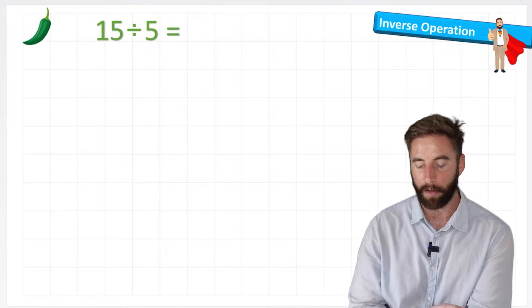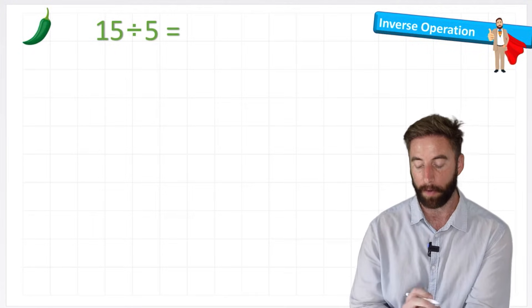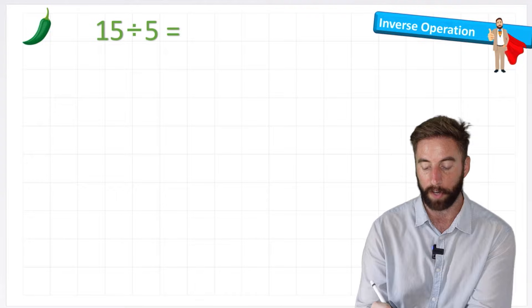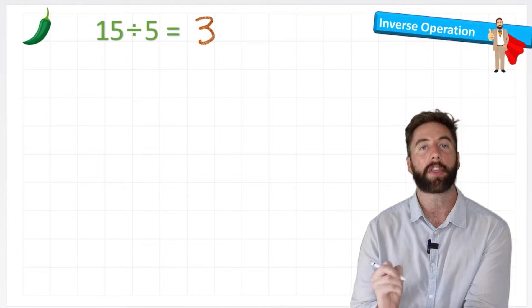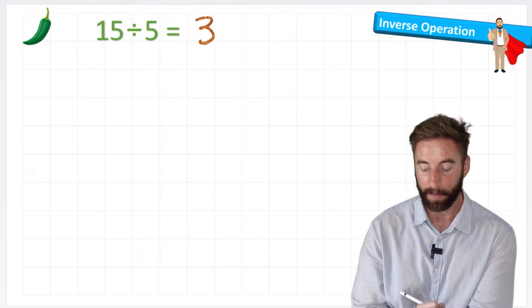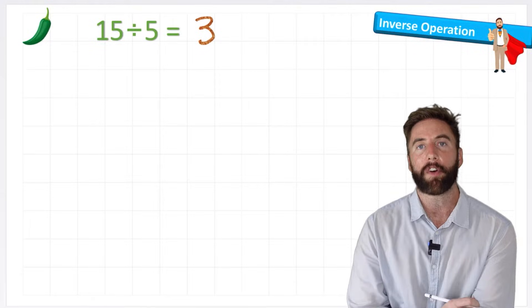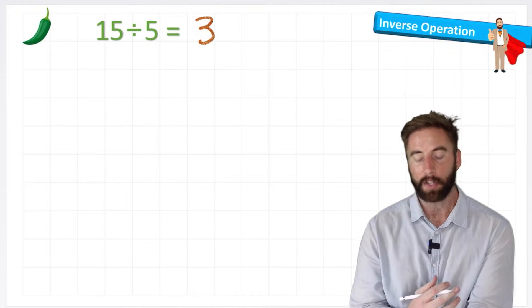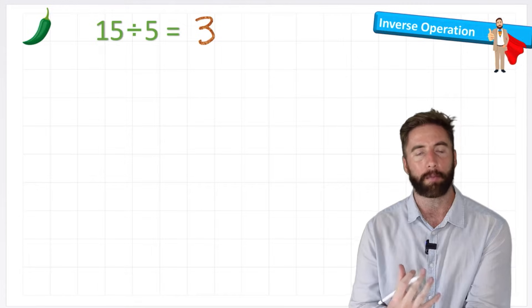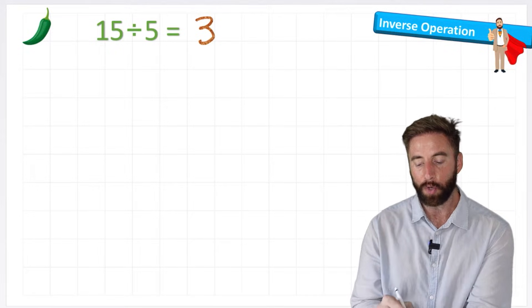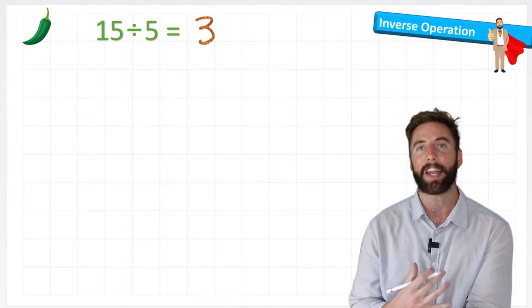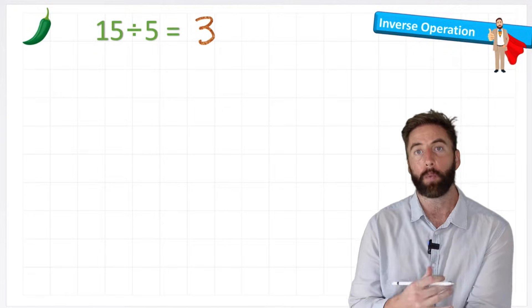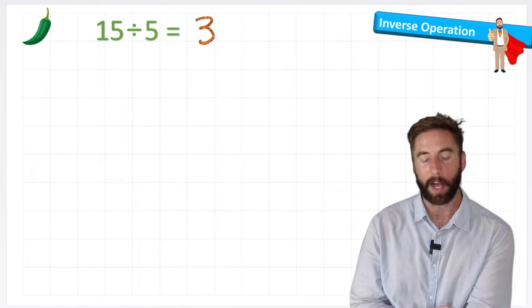So we have 15 divided by 5, so we know that if we have 15 divided by 5, we're going to get an answer of 3. There are 3 fives in 15. So what does inverse mean? Inverse essentially means the opposite, so division is the opposite of multiplication. So we can use these same numbers to create another number sentence, which is multiplication. Let's see how we can do that.